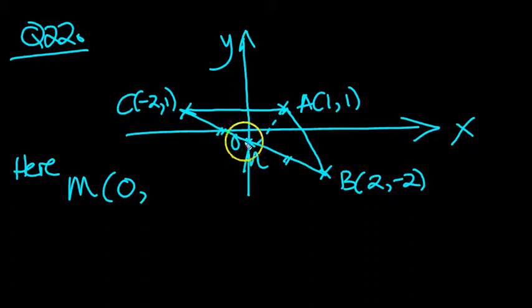It's on the X value equals 0. So the Y value, add them up. 1 and -2 is -1. Divide by 2 is -1/2. So there's our midpoint.